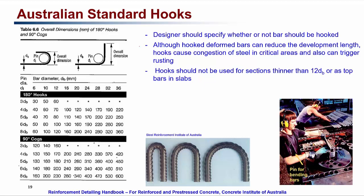Different anchorage types can be provided on reinforcement. For a 90-degree cog, the straight portion should be at least four times the bar diameter or 70 mm; the same applies for 135-degree and 180-degree hooks. When bending the bar, care must be taken not to bend it too sharply, as this can develop stress at the bend and lead to corrosion. Hooks can cause congestion of steel and trigger rusting, and should not be used for sections thinner than 12 times the bar diameter or at top bars in slabs. For example, using a 90-degree cog with a 20 mm bar and a 4db pin size gives an overall length of 240 mm for the extension.